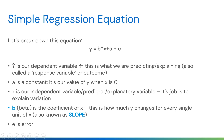In the regression equation, a is a constant — essentially alpha — representing the value of y when x is zero. Beta is the coefficient of x, and this is what we try to calculate: how much y changes for every single unit of x. Beta is also known as the slope of the line. When a line is horizontal, the slope is zero; as it moves upward, beta becomes greater than zero.